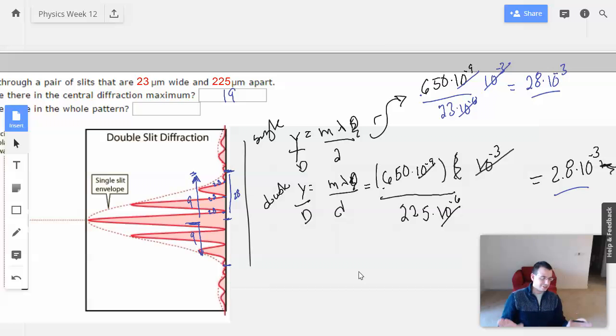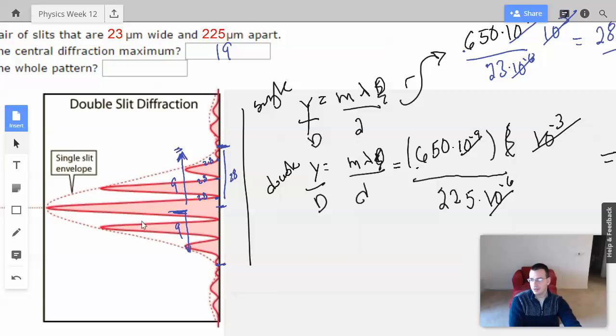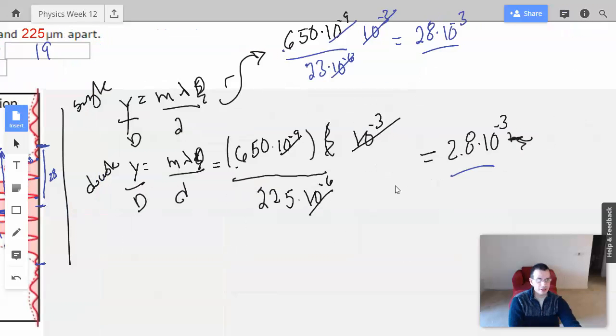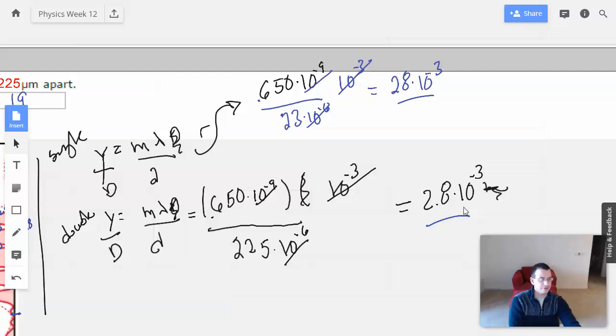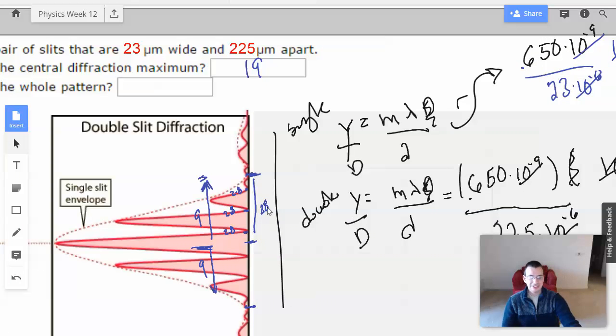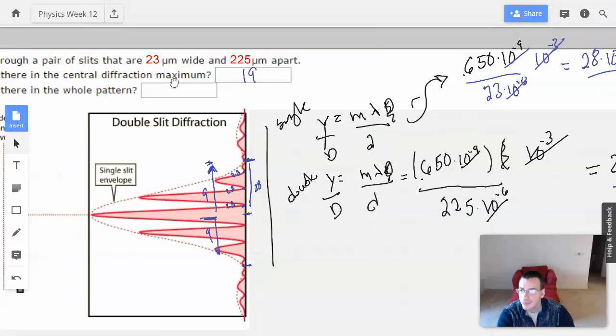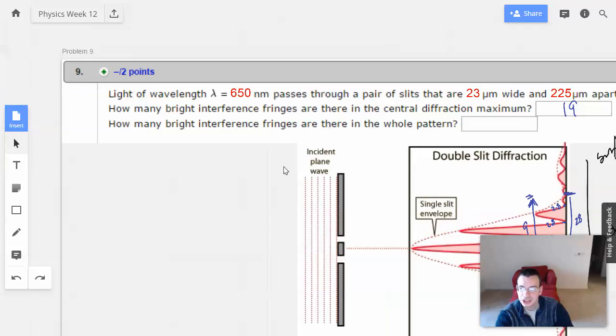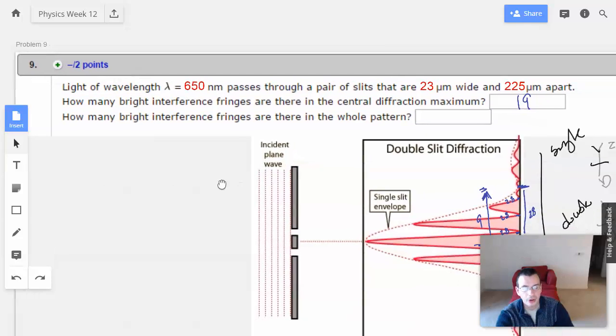You get 10 guesses here. So if you get this wrong, maybe try 21, maybe try a little bit less. Follow your heart. The idea here is you're going to find out how many of these small guys are tied to the big guy. So in this case, 28 times 10 to the negative 3rd divided by 2.8 times 10 to the negative 3rd. I'm going to say it's 9 on top, 9 on bottom, and 1 in the middle. So the second question is, how many bright fringes are there in the whole pattern?